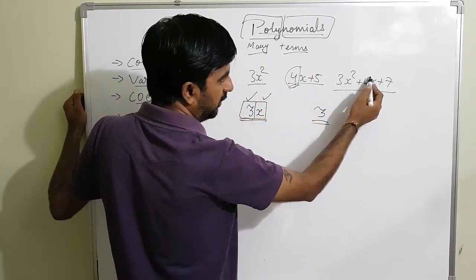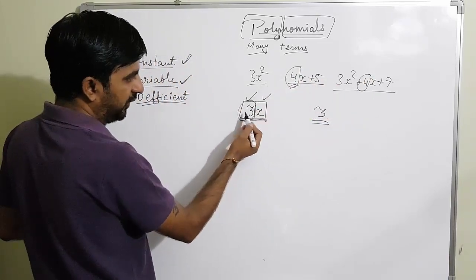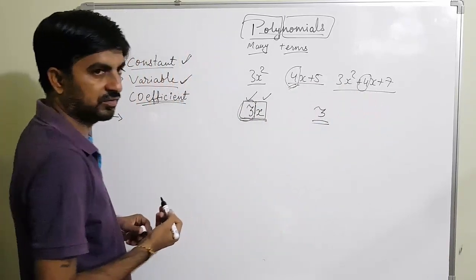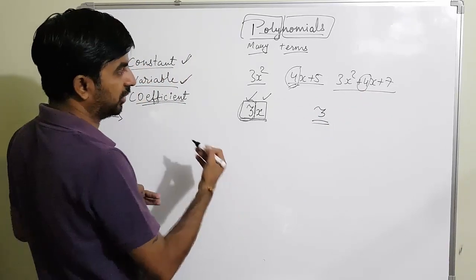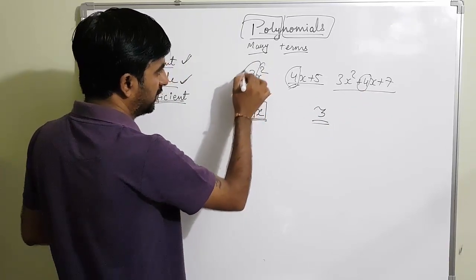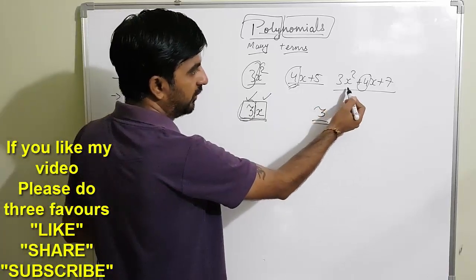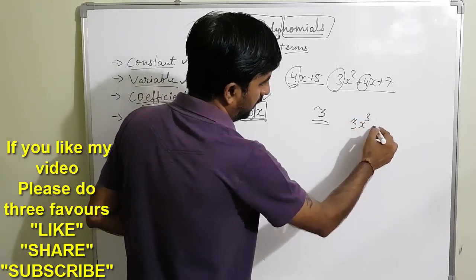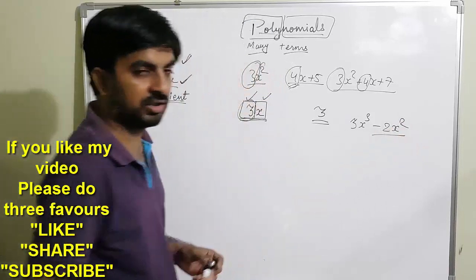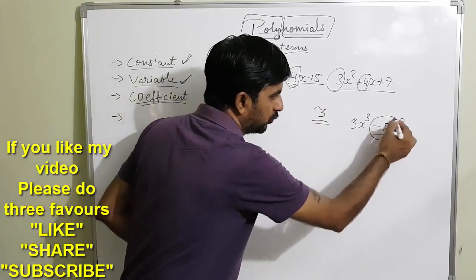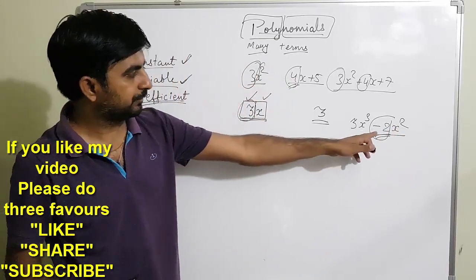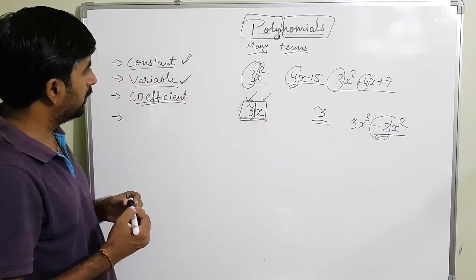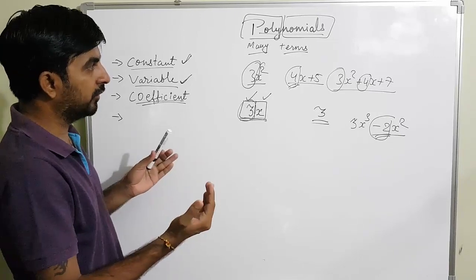If I say coefficient of x in 4x plus 5, the coefficient of x is 4. Now if I write down 3x cubed minus 2x squared, the coefficient of x squared will be minus 2 — you have to keep the sign with that constant as well. So here the coefficient of x squared is minus 2. This is all about coefficients.